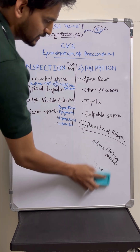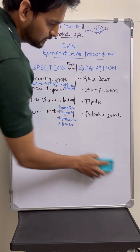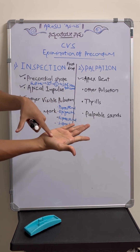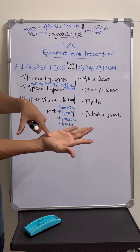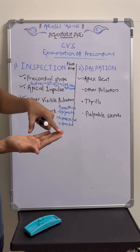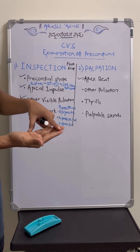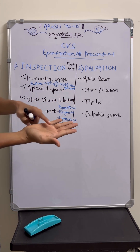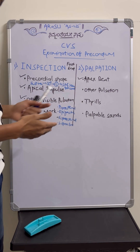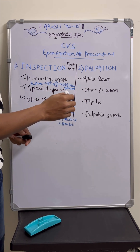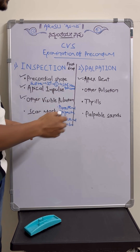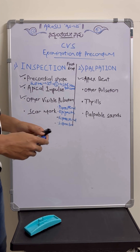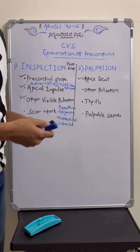Then comes the third heading — thrills. You have to feel the thrill with the distal palm, whereas heave or lift should be felt with the proximal part of the palm. For hard sounds, use the tips of fingers. Thrill is a palpable murmur — use your distal palm to feel for it. It is the definite sign of the lesion underlying that particular site.